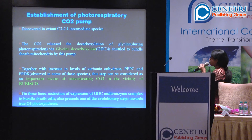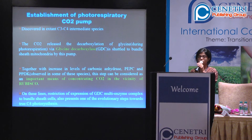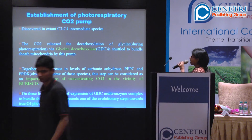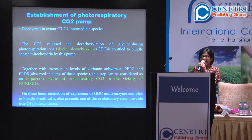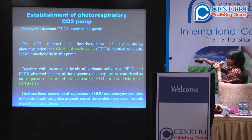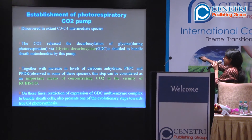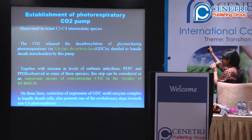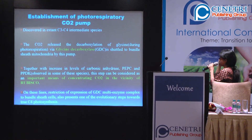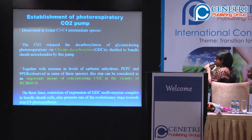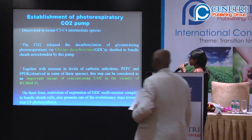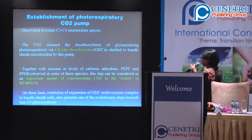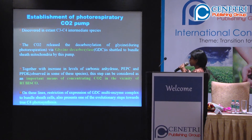Then there was establishment of the photorespiratory CO2 pump. C3 plants showed the phenomenon of photorespiration, and there was a means to use this process as a CO2 pump to concentrate CO2 in the vicinity of Rubisco. As we saw in the process of photorespiration, the enzyme glycine decarboxylase converts glycine into serine. The expression of this enzyme was restricted to the bundle sheath mitochondria, so that CO2 can be produced in increased amounts in the bundle sheath cell. Together with an increase in levels of carbonic anhydrase, PEPC, and PPDK, this step served as an important means of concentrating CO2 in the vicinity of Rubisco.